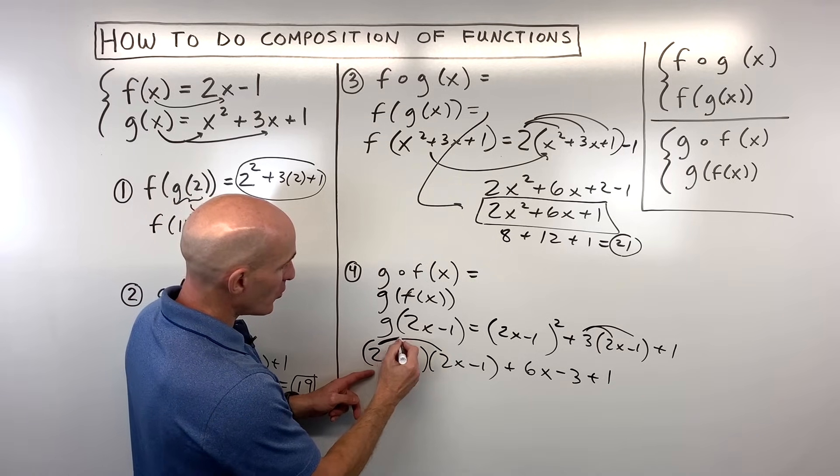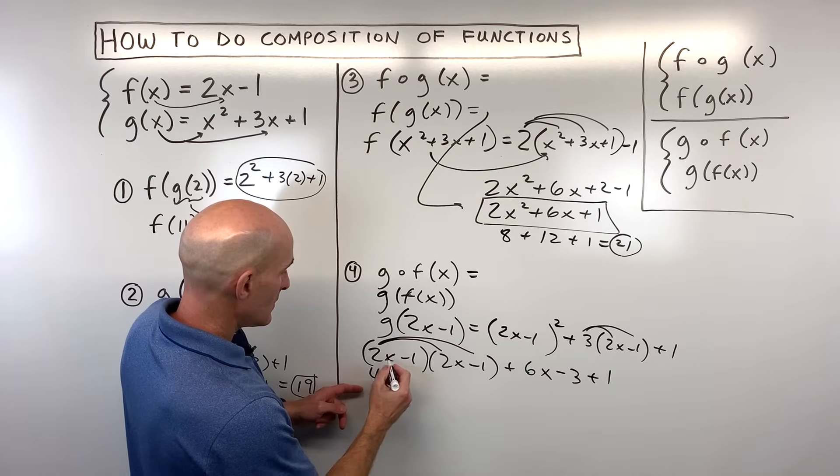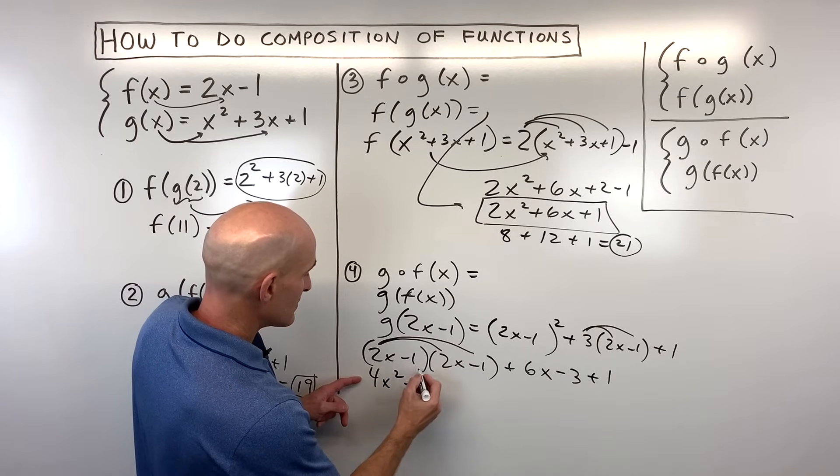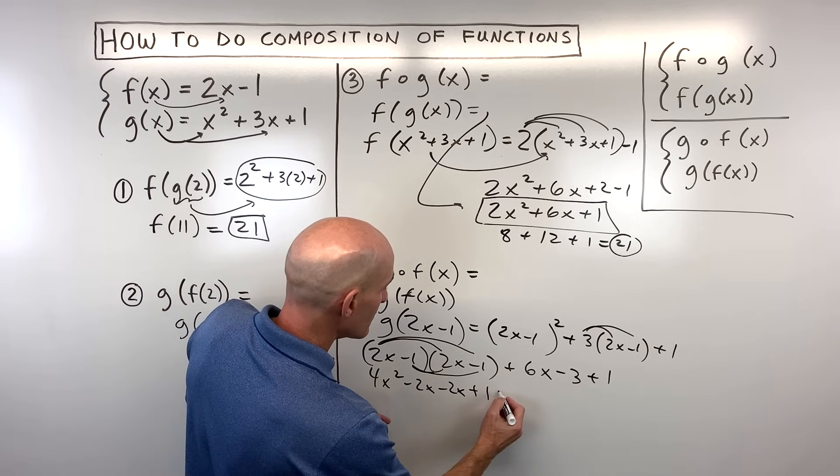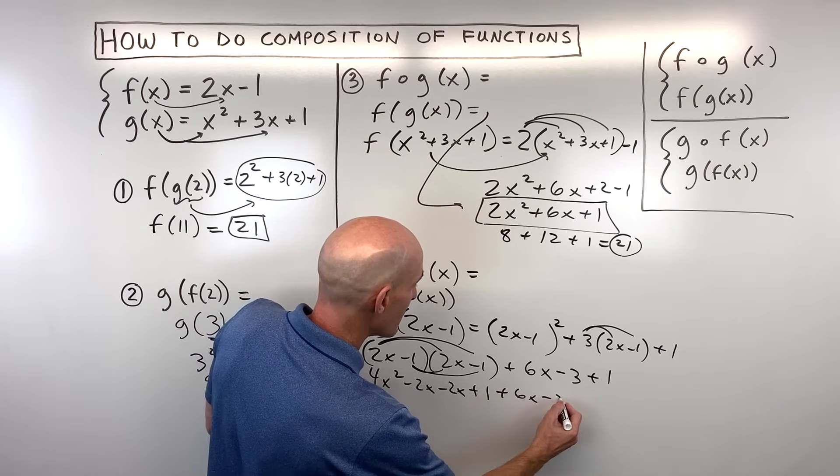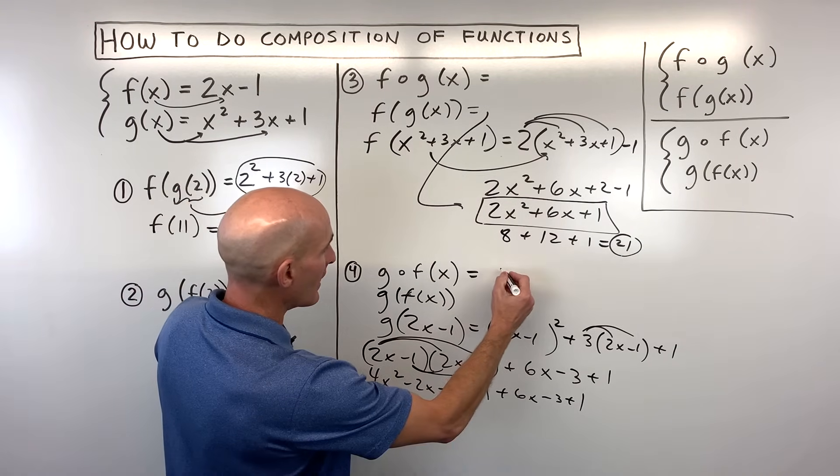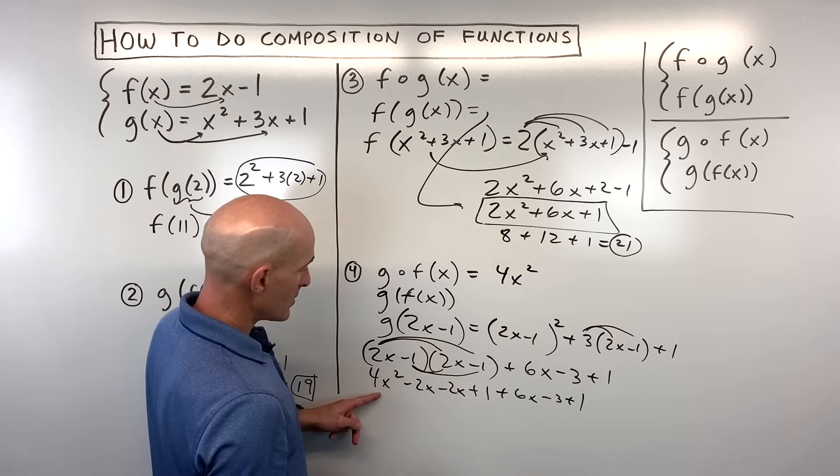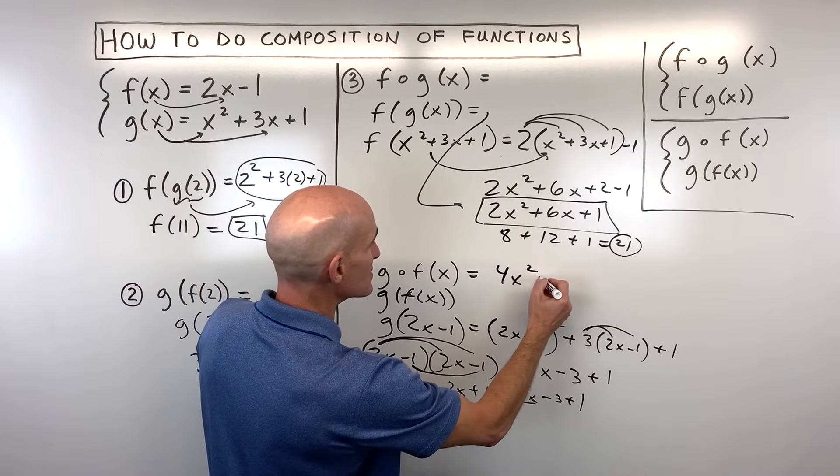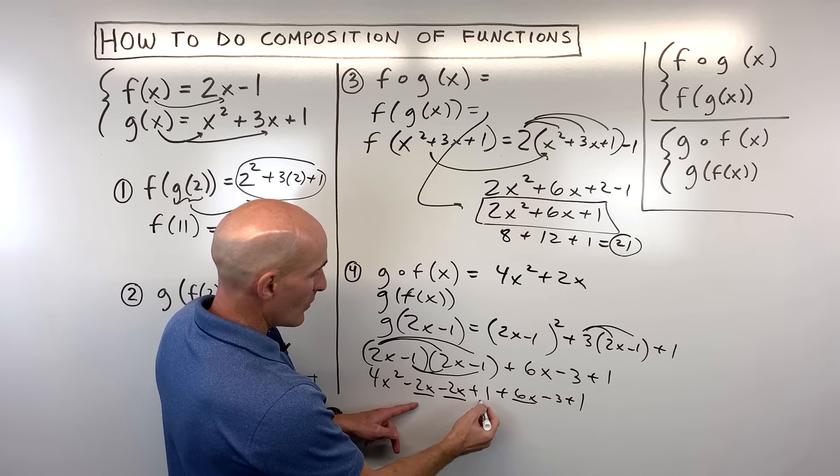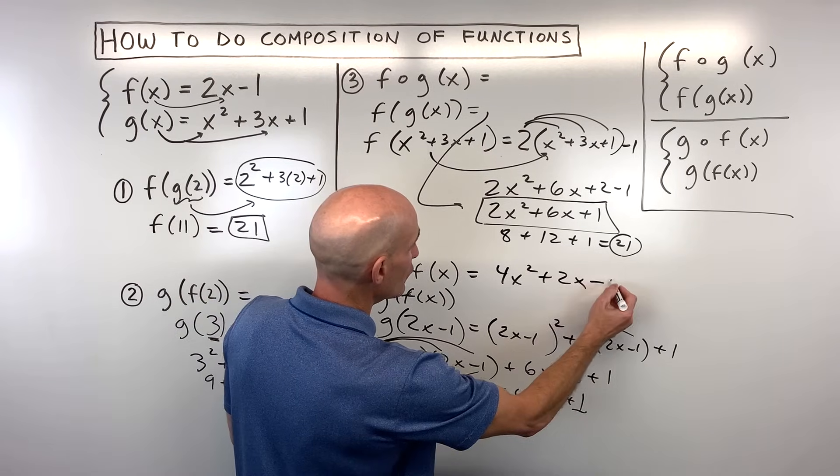Here we have to foil or distribute twice so we get 4x squared minus 2x minus another 2x plus 1 plus 6x minus 3 plus 1. Okay so let's combine like terms starting with our highest power. We've got 4x squared, we've got a negative 2x a negative 2x that's negative 4x plus 6x is 2x, and we have 1 plus 1 is 2 minus 3 is negative 1.